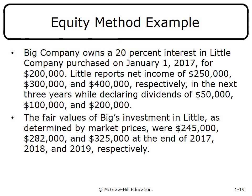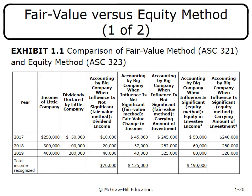Here is an example: Big Company owns a 20% interest in Little Company, purchased January 1 for $200,000. Little reports net income of $250,000, $300,000, and $400,000 respectively in the next three years and declares dividends of $50,000 and $120,000. The fair values of Big's investment in Little were $245,000, $282,000, and $325,000. This allows a comparison of the two methods.